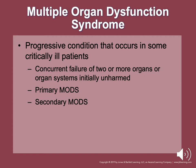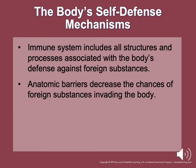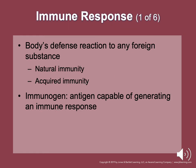The body's self-defense mechanism: the immune system includes all structures and processes associated with the body's defense against foreign substances. Anatomical barriers decrease the chances of foreign substances invading the body — examples include the skin, the hairs, and the acid in the stomach. The body mounts defense reactions to any foreign substance.